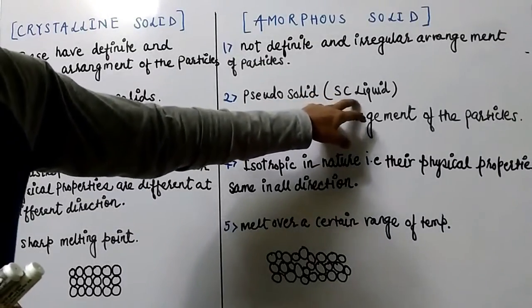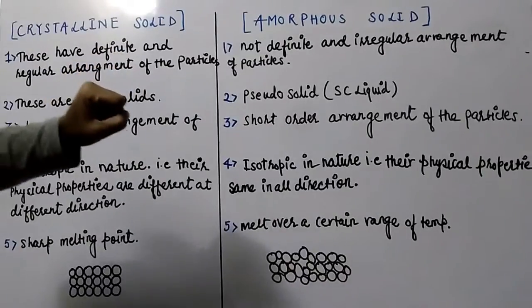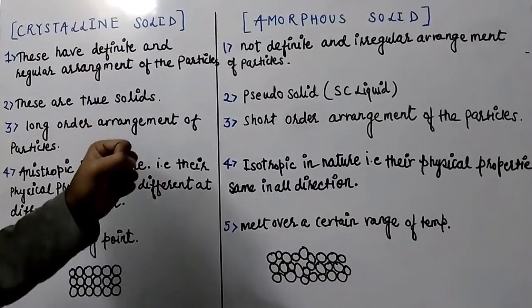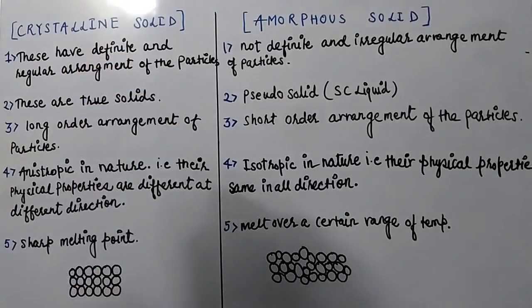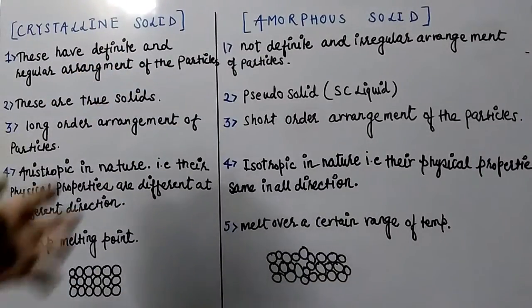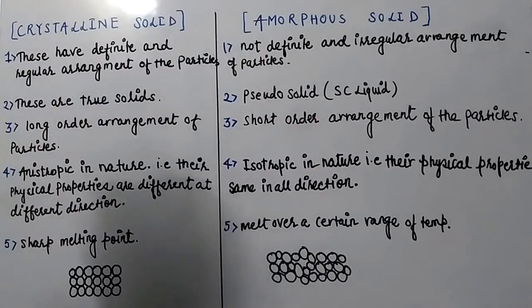Amorphous solids are also called super cooled liquids. You can find in the NCERT book what a super cooled liquid is. We will also discuss this topic — I will make a dedicated topic on super cooled liquid.